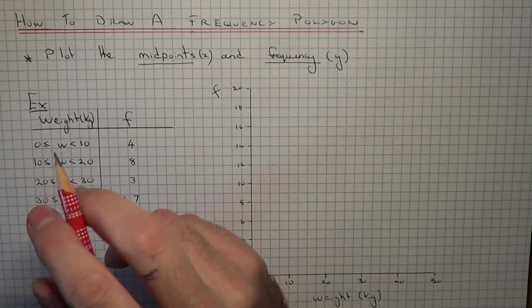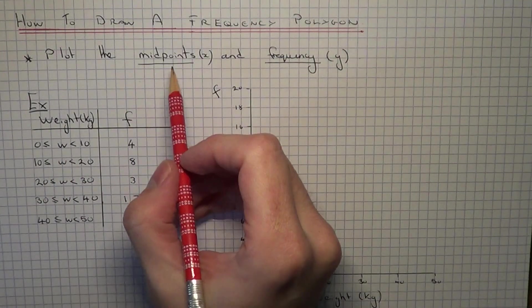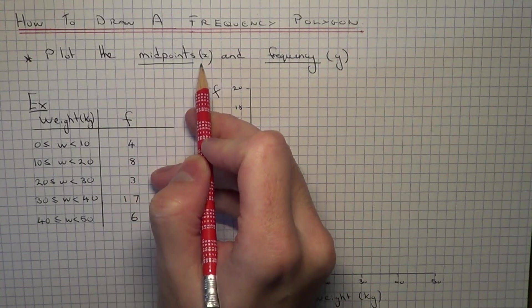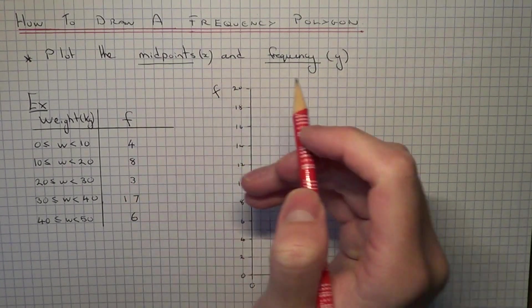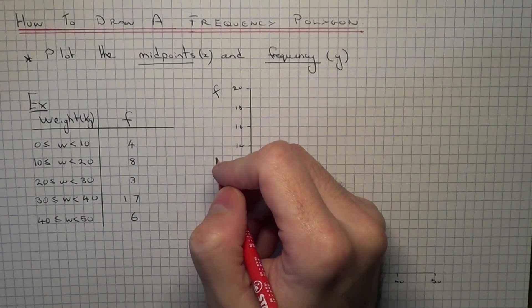Now the main thing to remember when you draw a frequency polygon is that you will need to work out the midpoints of the groups and on the y-axis you plot the frequency.